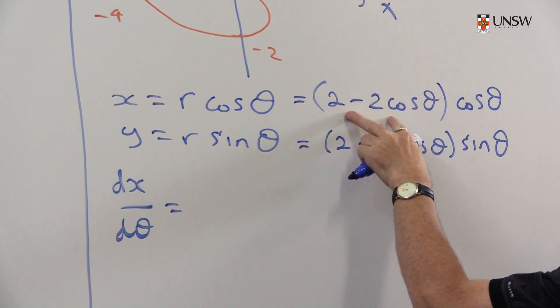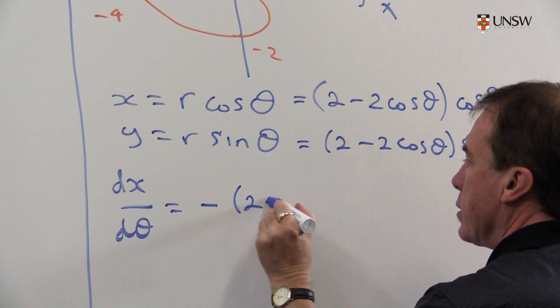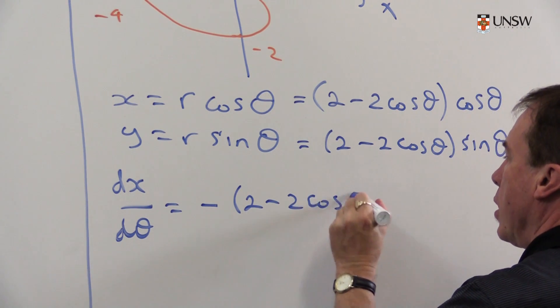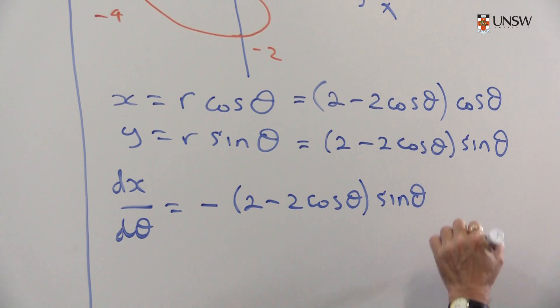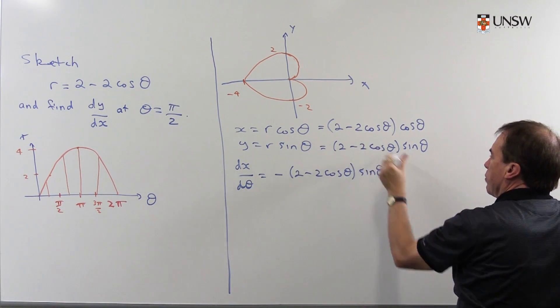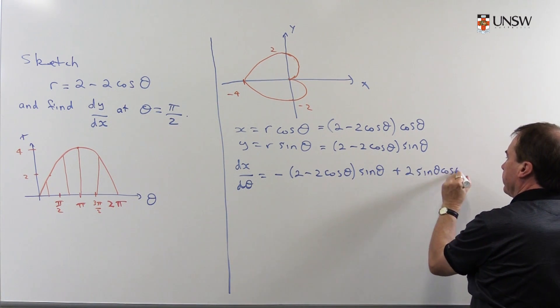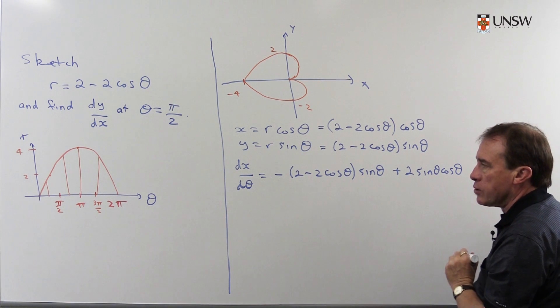So the product rule says you copy the first, differentiate the second. So I'll get -(2 - 2cos(θ))sin(θ). Then you copy the second, differentiate the first. That will give me +2sin(θ)cos(θ). So there's the derivative.